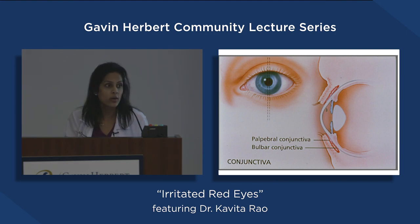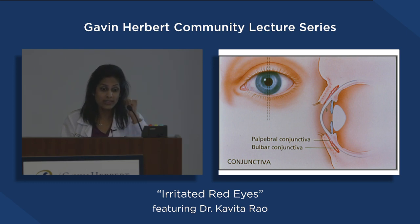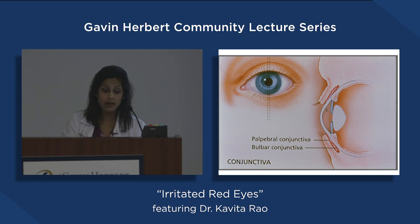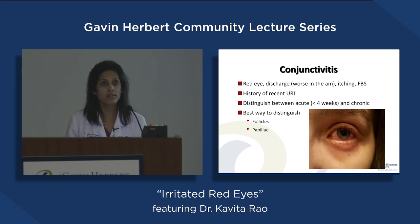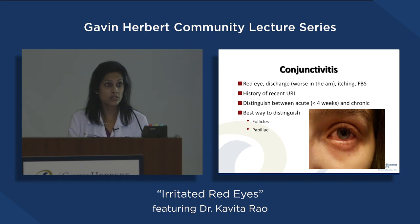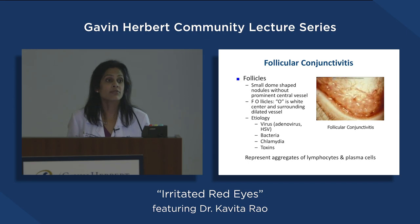The conjunctiva has two parts: the bulbar conjunctiva is the white part, and the palpebral conjunctiva is the inner surface of the eyelid. With conjunctivitis — which most of you have seen — it's usually caused by viral agents. Just like a viral cold or flu, the virus can affect the eye, causing redness, mucus, and yellowish discharge. Because it's a virus, it usually goes away on its own. Sometimes we give antibiotics to prevent secondary infection.